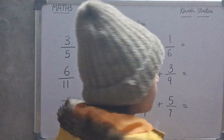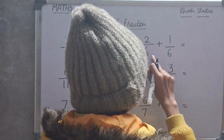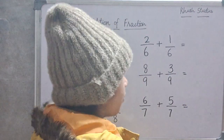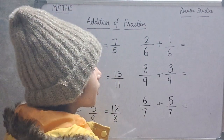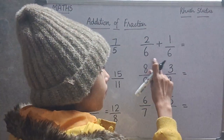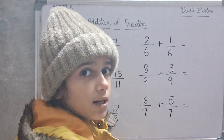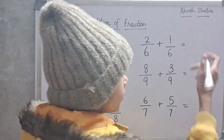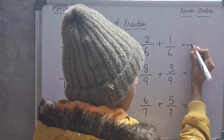Now, we will add 2 upon 6 plus 1 upon 6. In both the fractions, denominators are same. So, in the answer, same. The answer is 3 upon 6.